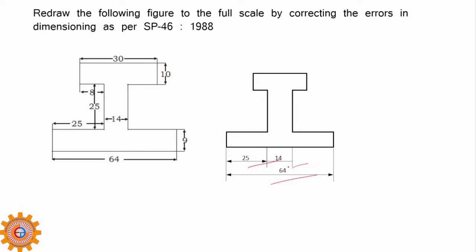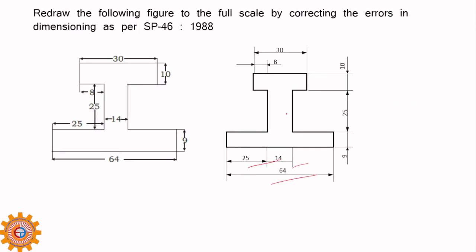For the dimension 8, since the length is small you cannot fit arrows and text inside that small length, so I have taken the text outside. I have already explained how to do this dimensioning. For small dimensions like 10, you have to place them like this. For chain dimensioning, the text must be placed appropriately. Here I missed an arrow — you can put the arrow like that and also put 14 outside if it is not possible to fit inside.